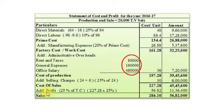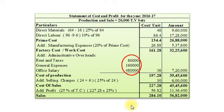Our desired profit is 25% of total cost as per information in the sum. So 25% of Rs. 227.28 amounts to Rs. 56.82, and total amount Rs. 11,36,400. And our sales amounts to Rs. 284.10 per unit and Rs. 56,82,000. Dear students, thank you very much for watching my video lecture. Very soon we will meet with another example of unit costing, especially estimated cost sheet.